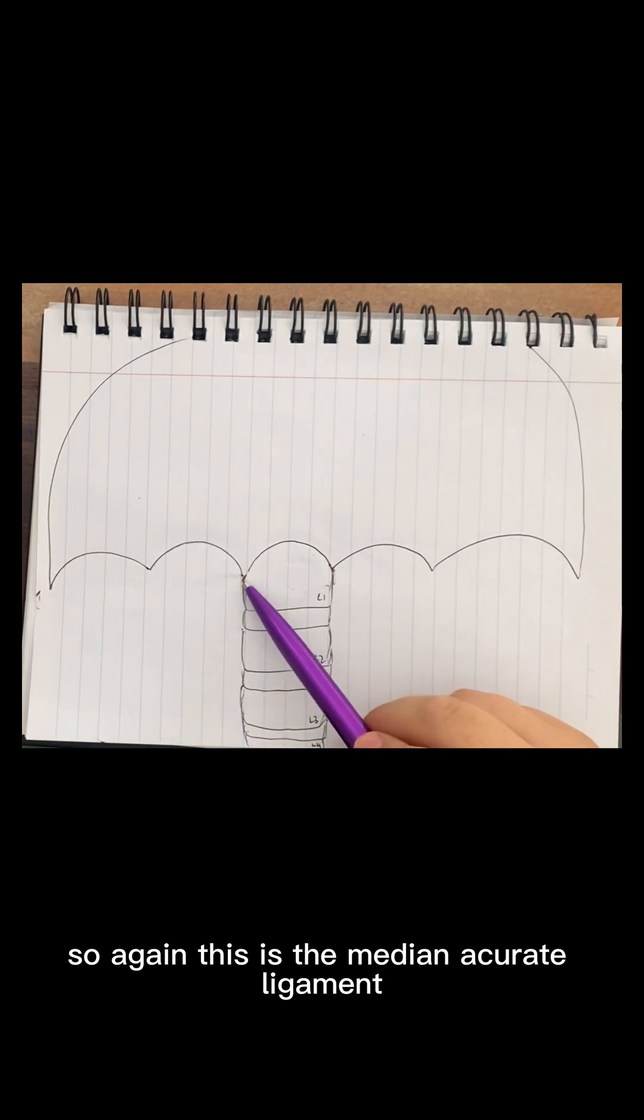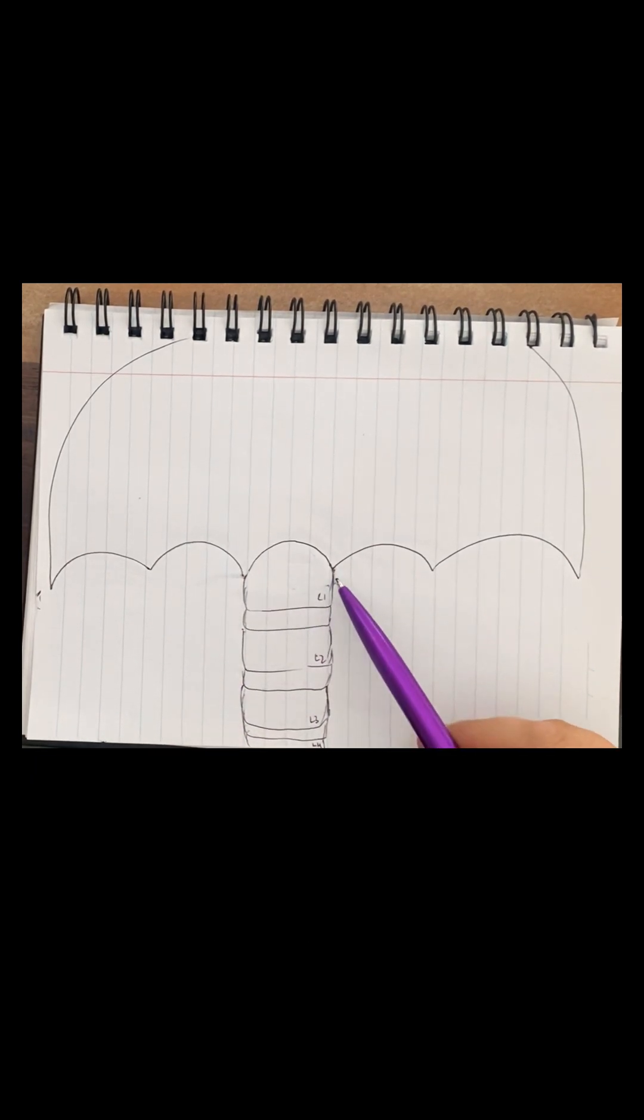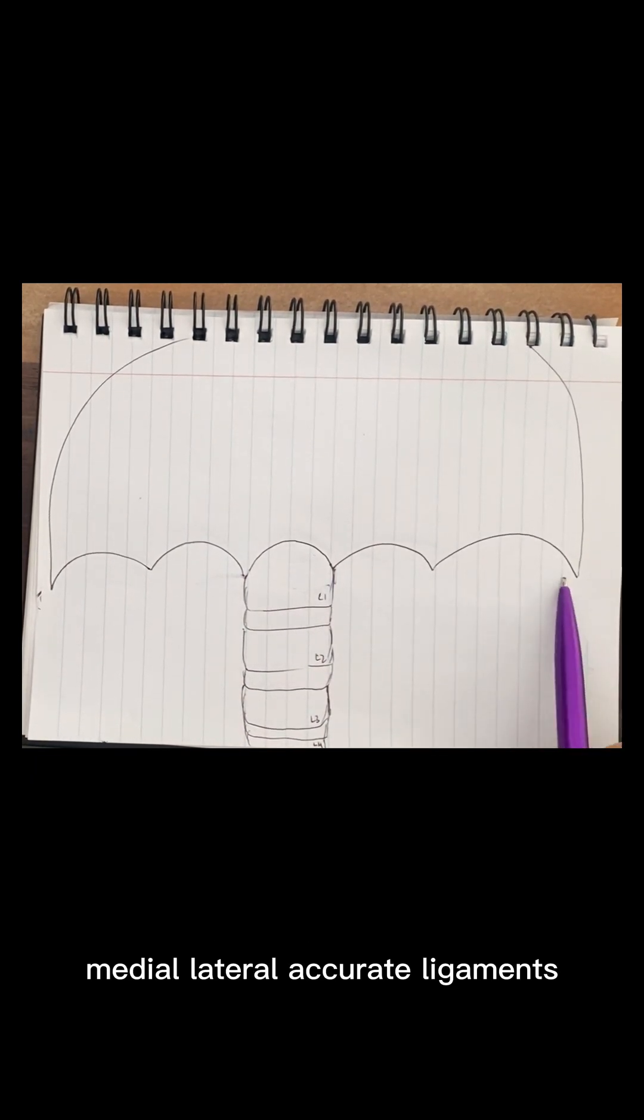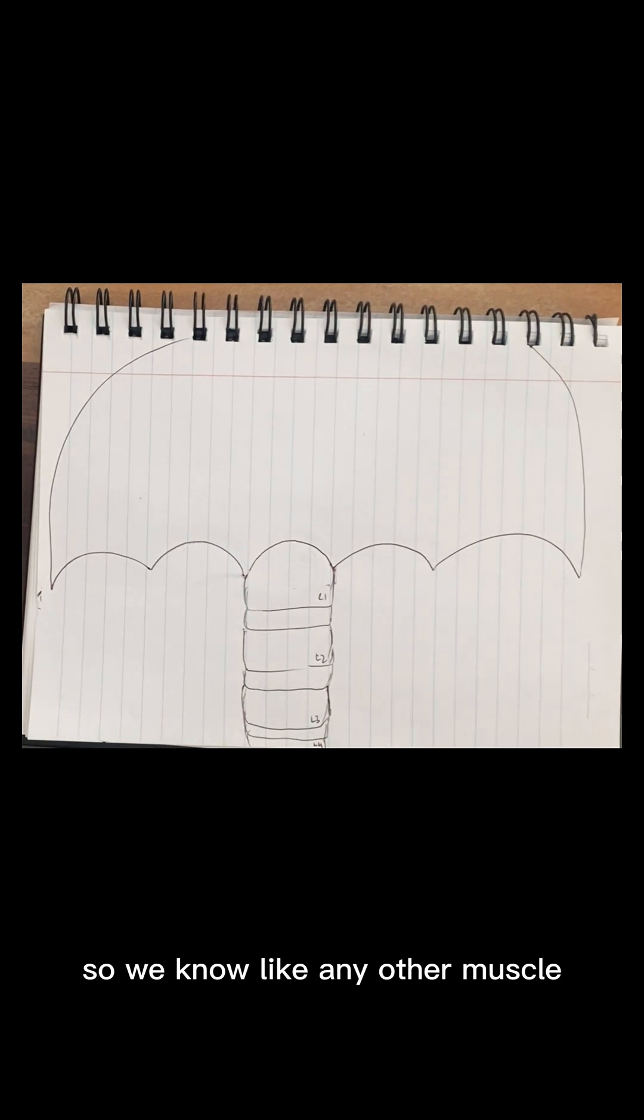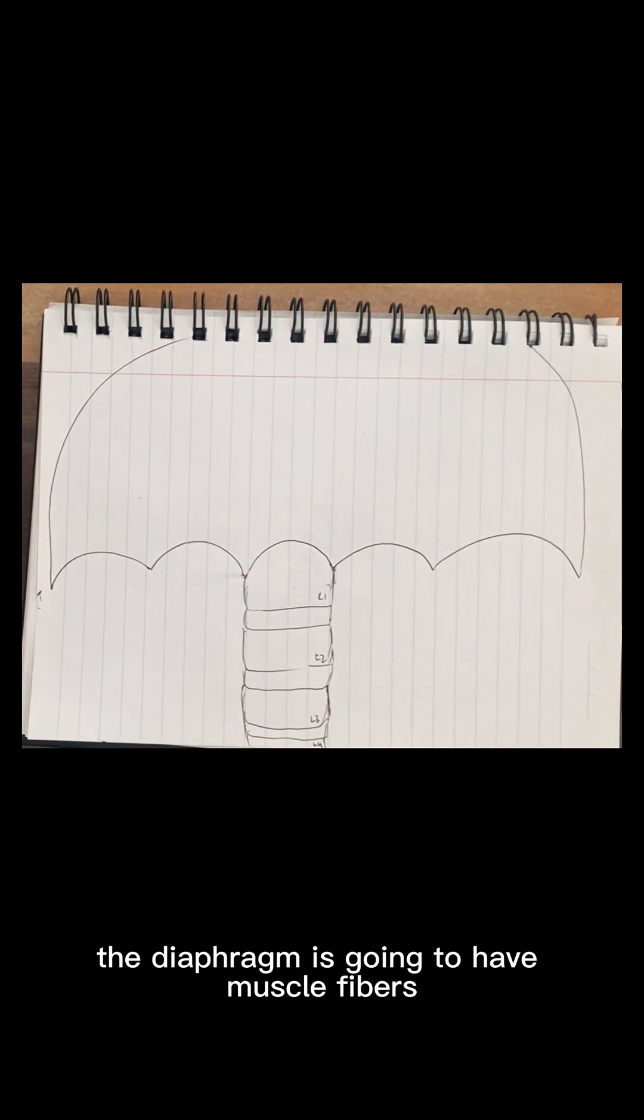So again, this is the median arcuate ligament, medial lateral arcuate ligaments. So we know like any other muscle, the diaphragm is going to have muscle fibers plus tendinous insertions and attachments.